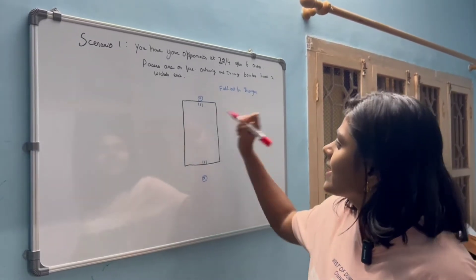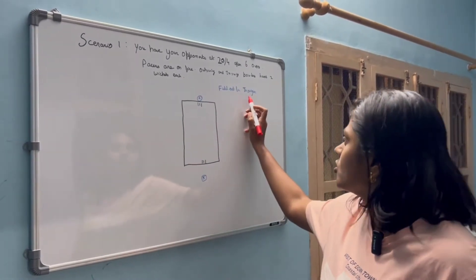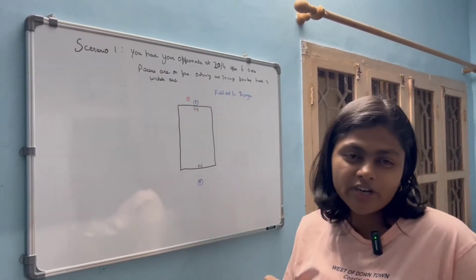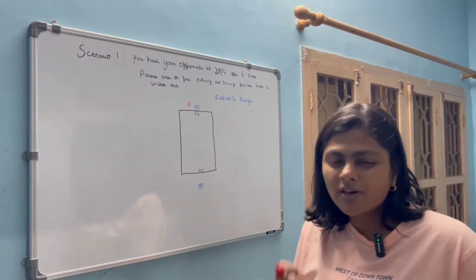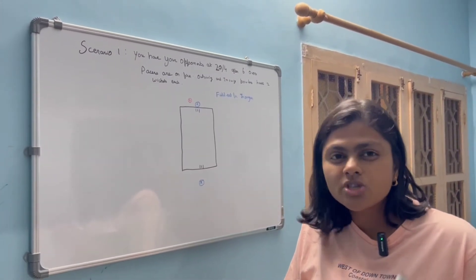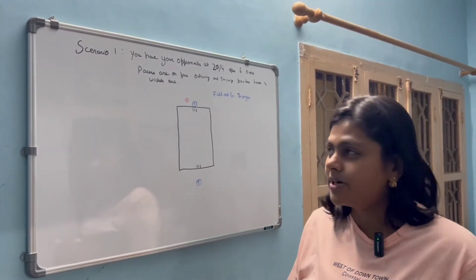So coming to the catching position first, even though it is for an inswinger I will definitely have a first slip a little bit closer to the wicket keeper because it is for that one that eventually does not move and it can also fetch you the outside edge for the ball that straightens a little bit.